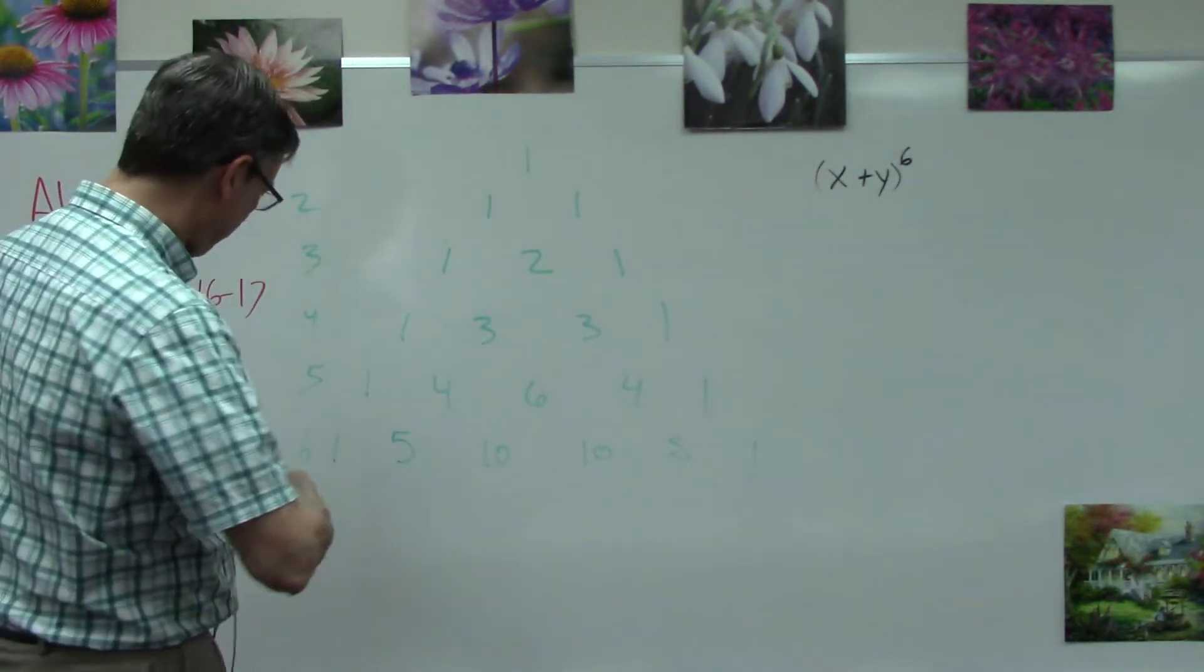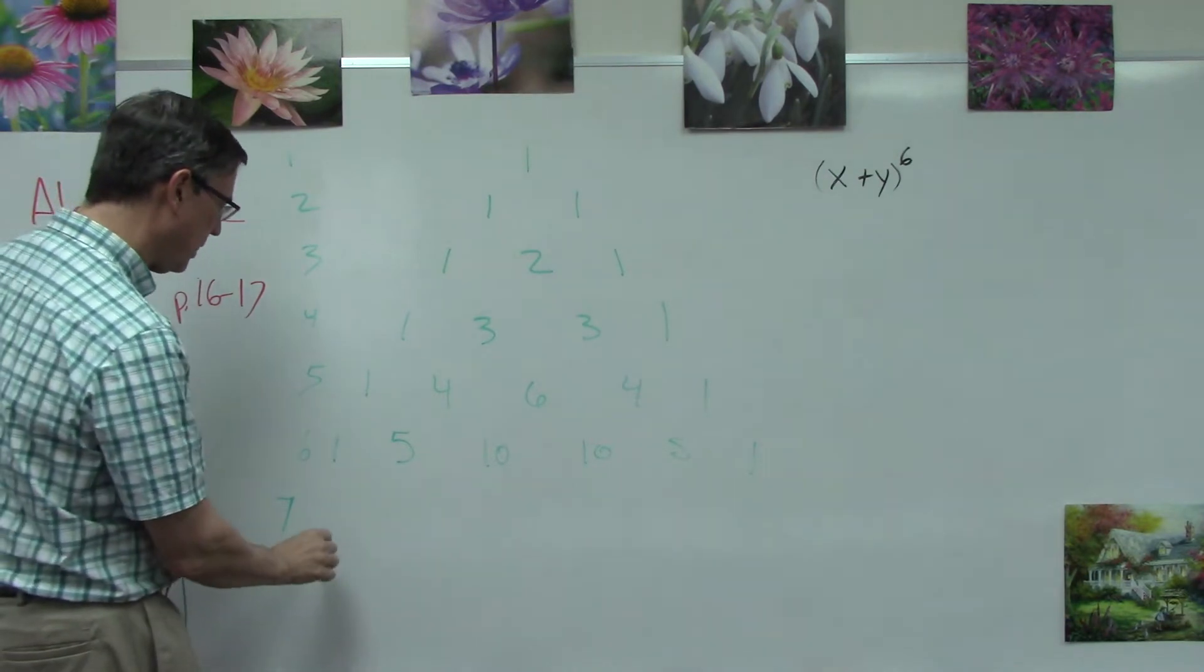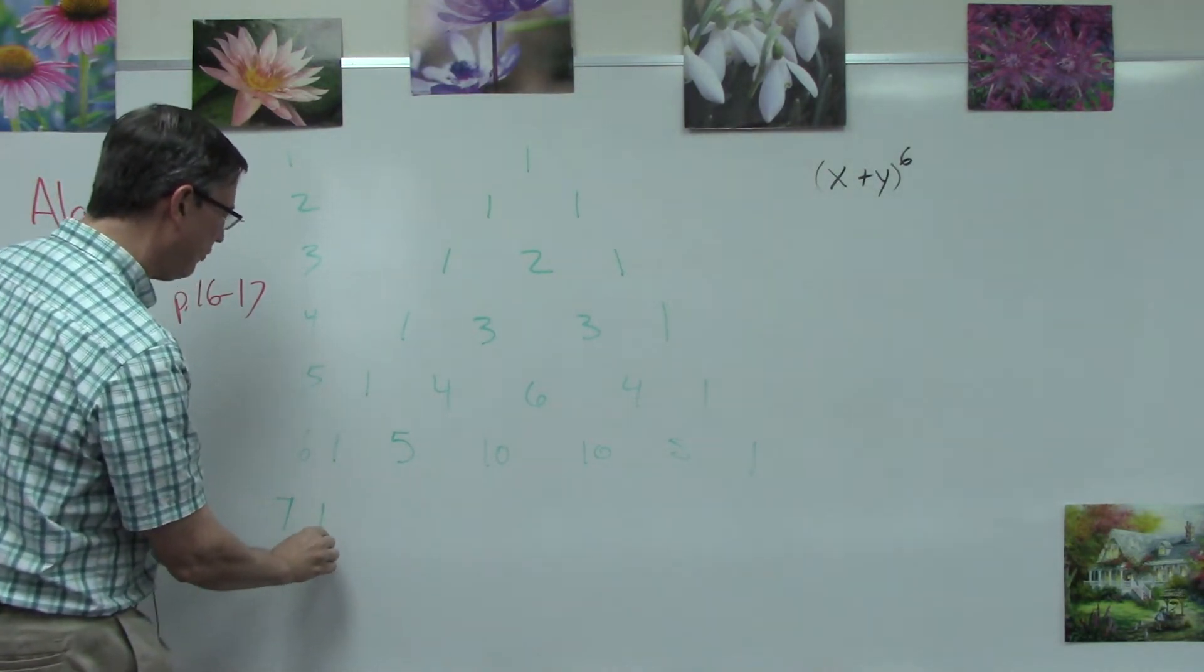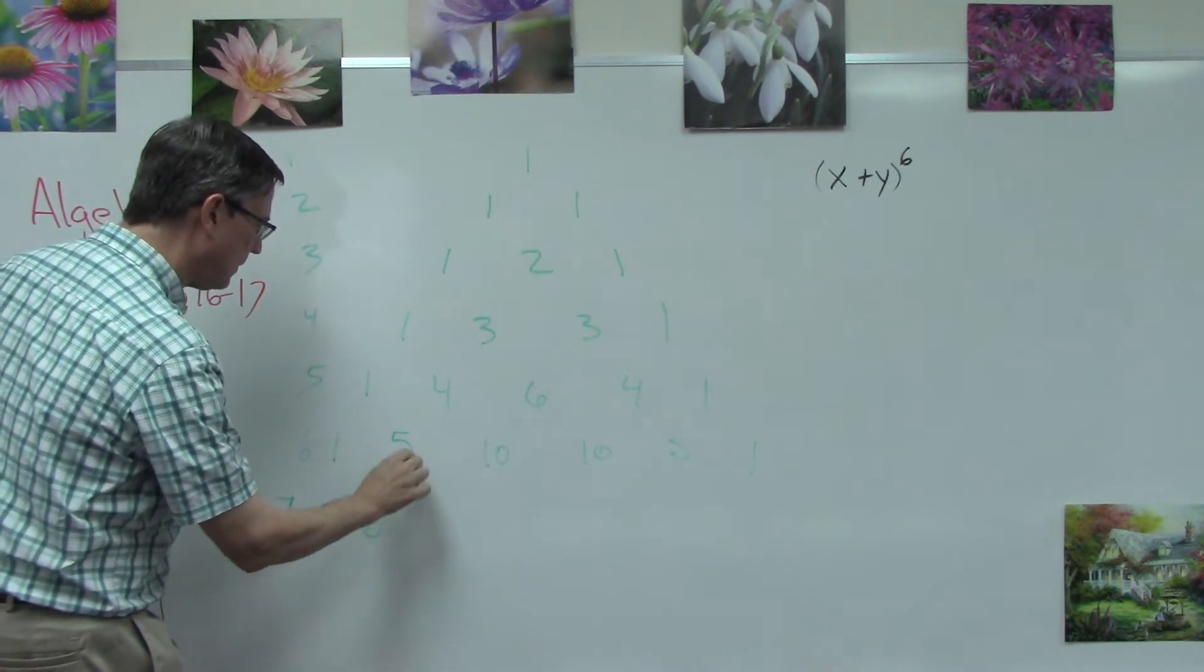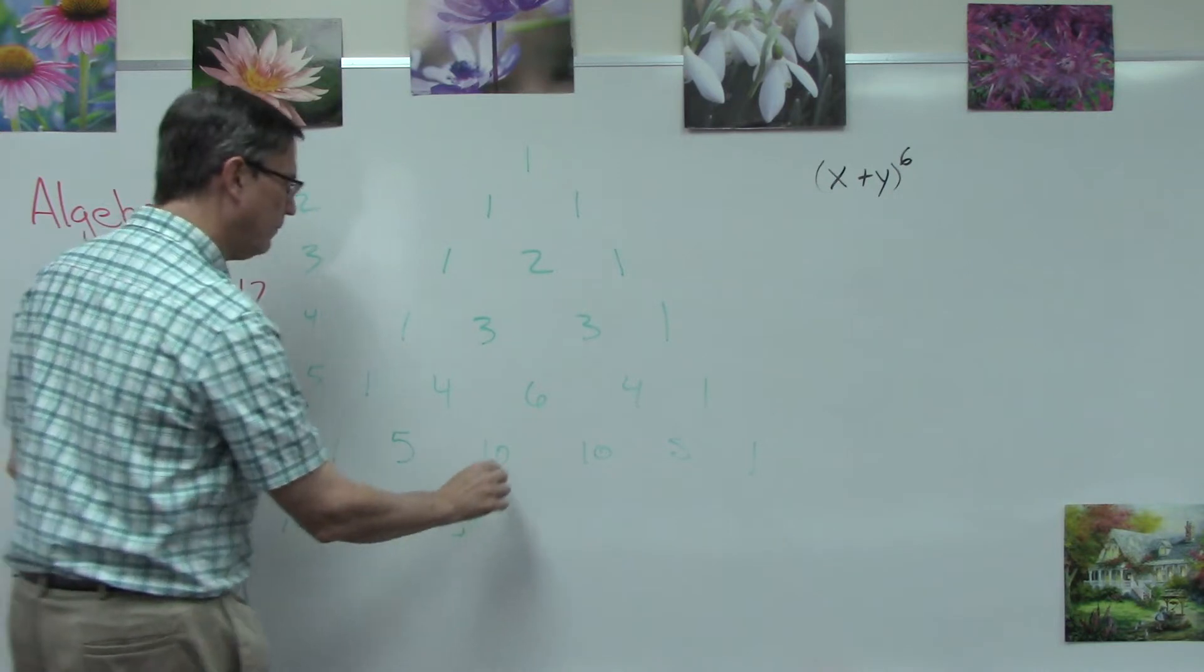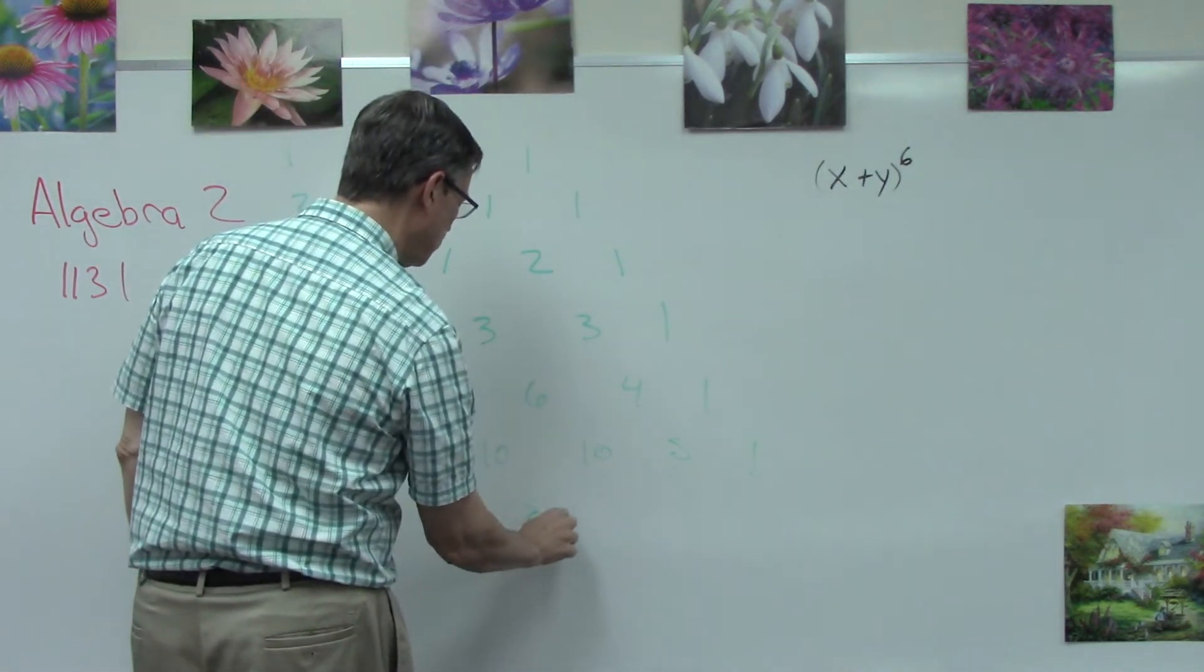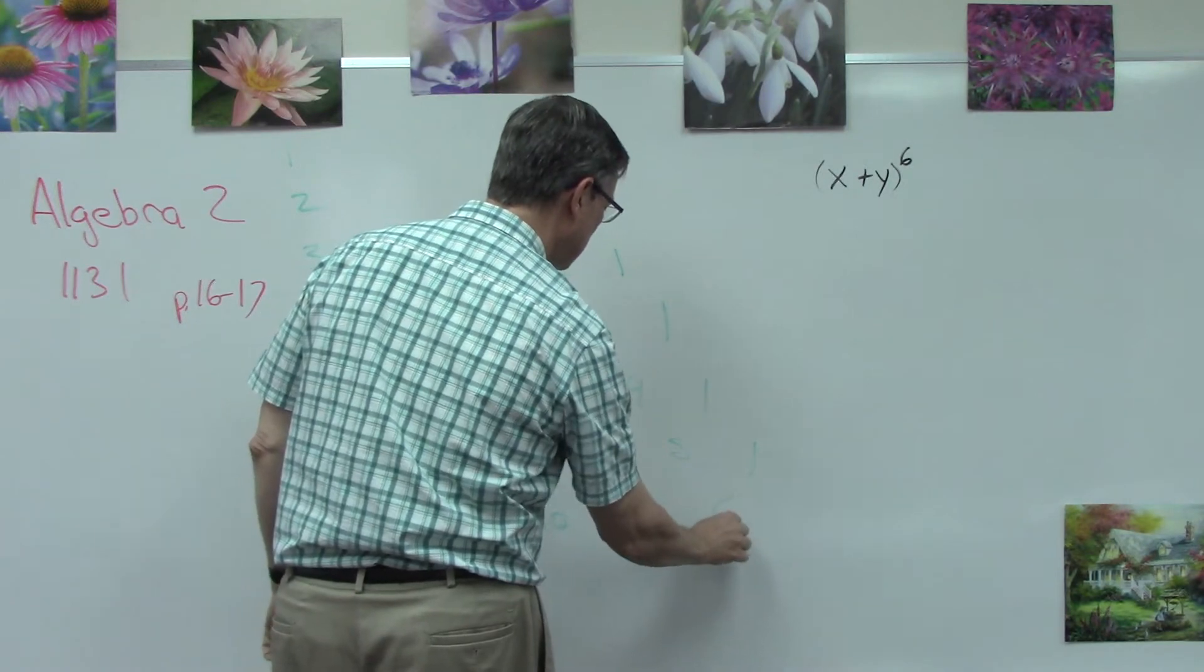So we're going to have a one out front. We add one plus five to get six, add five plus ten to get fifteen, ten plus ten is twenty. Over here we get fifteen, six, and then we keep the one out there. Now let's take something like x plus one, actually x plus y.